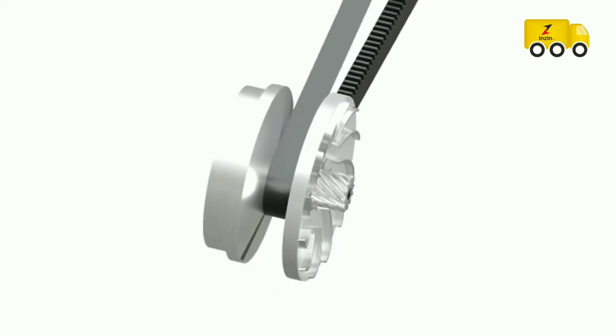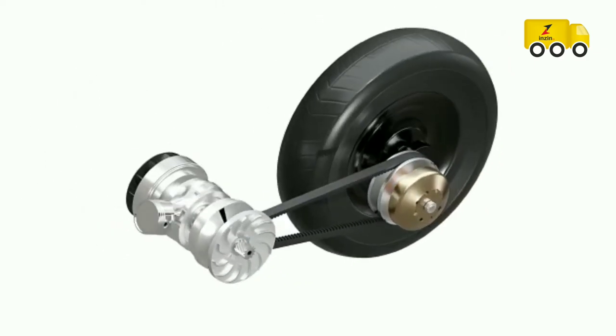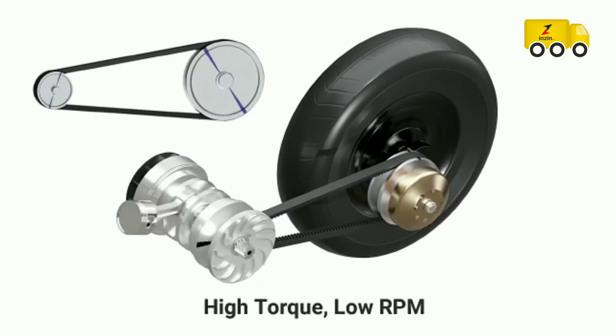In the driver pulley, the axial stiffness of the belt pushes the sliding cone farthest apart. This causes the driver pulley to have minimum diameter. This is the condition of high torque, low RPM.